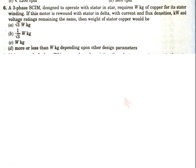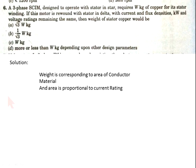Question 6: A three-phase squirrel cage induction motor is designed to operate with the stator in star connection, requiring W kg of copper for its stator winding. If this motor is rewound with the stator in delta, with current density, flux density, kilowatt and voltage rating remaining the same, then the weight of stator copper would be — options A, B, C, D.